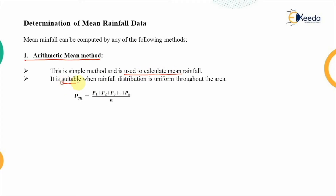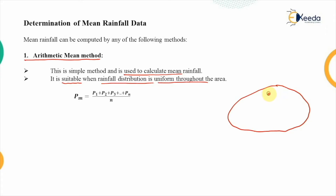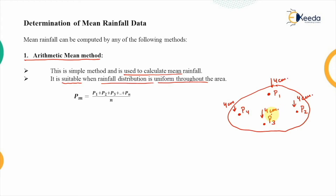This method is suitable when the rainfall distribution is uniform throughout the area. For example, consider an area under consideration with different rain gauge stations — points where we measure rainfall readings. If we have four rain gauge stations, we assume the rainfall is uniform throughout the area. That means across all rain gauge stations, the rainfall intensity and depth will be the same. If 4 cm of rainfall is falling over the 4th station, then the 2nd station also has 4 cm, P1 has 4 cm, and P3 also has 4 cm per hour — meaning the rainfall distribution is uniform.